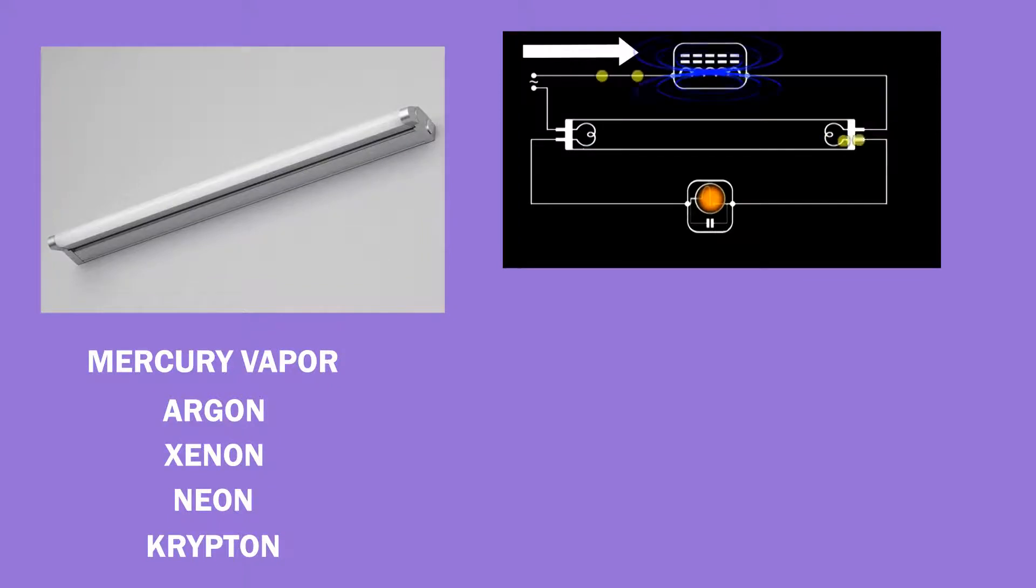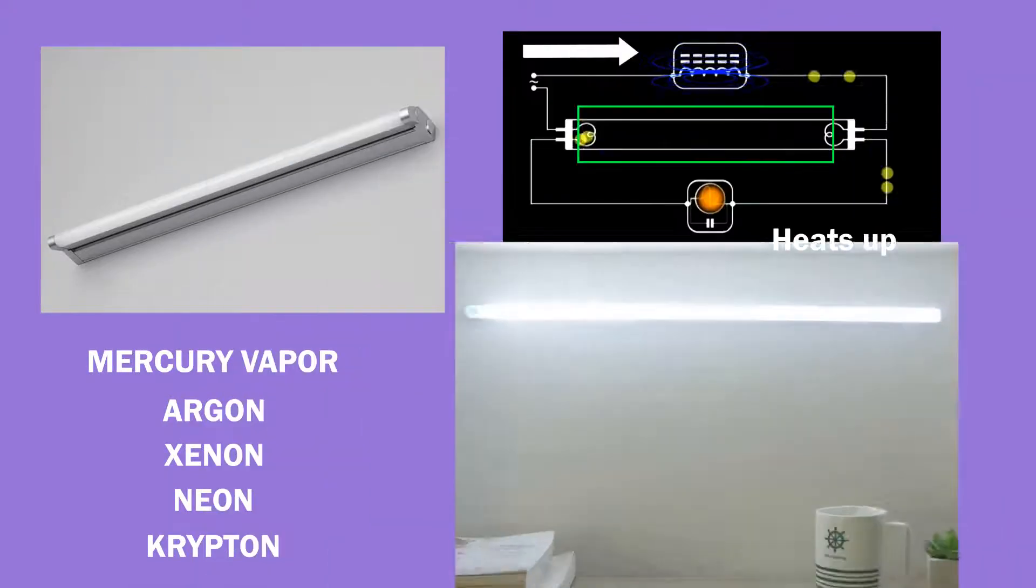Tube light rods at home are an example of discharge tubes. In them, mercury vapor and argon, xenon, neon, or krypton gases are filled, and when voltage is applied, the gas heats up and emits light.